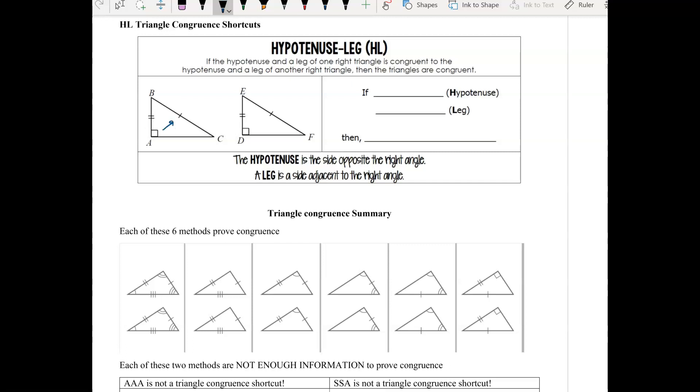Remember across from the right angle always, that's the hypotenuse, and the two sides that are next to the right angle, those are called the legs.